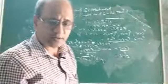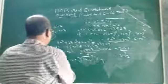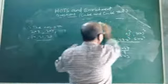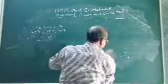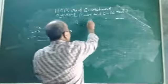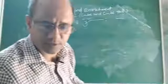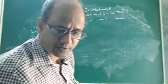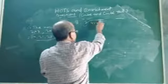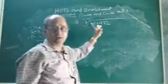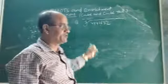Now let us discuss the enrichment questions. The enrichment question says: find the cube root by estimation. The number is 4,741,632 — a very big 7-digit number. How to find its cube root by estimation? Let us recall the estimation process.